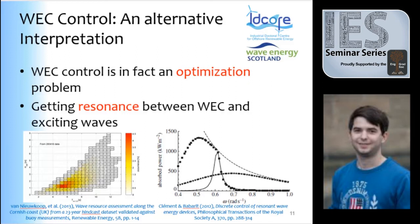What you want to do is change the dynamic response of the system so that you get resonance at every single wave frequency or wave period. This is done with what we call control systems for wave energy devices: complex conjugate control — which cannot be done in practice — resistive control, and latching control. The aim is to increase the area under this curve so that you get bigger wave energy absorption. This is all you want to do in the control problem for wave energy converters.